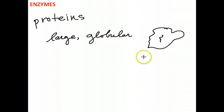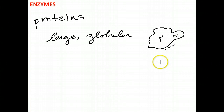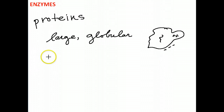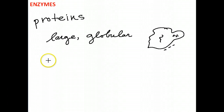They're going to have some shape and formation on their surfaces. These shapes are going to have different charges — they might have a little bit of negative charge here, or a little bit of positive charge. This shape and charge is very important for its activity. All of these large globular proteins that we call enzymes are going to be responsible for chemical reactions.